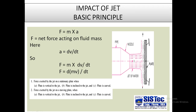Now we classify the jet and plate combinations. The first category is force exerted by the jet on a stationary plate, which has three cases: case A — plate is vertical to the jet; case B — plate is inclined to the jet; case C — plate is curved.